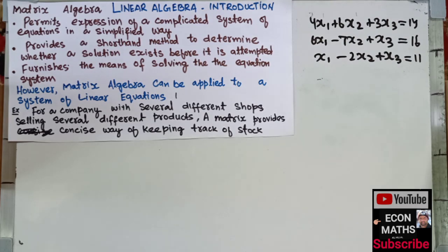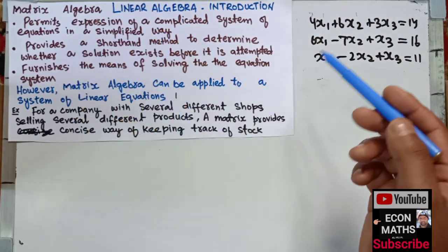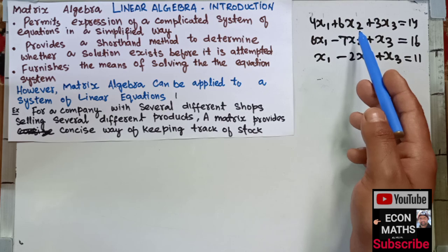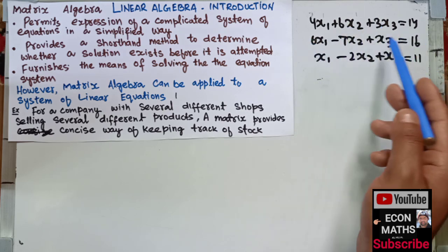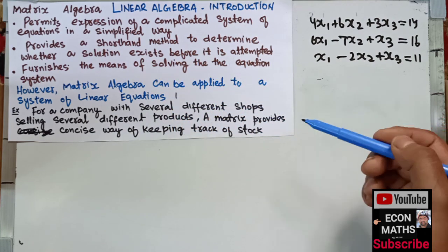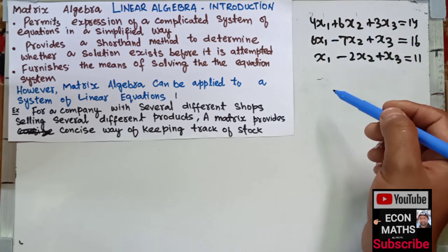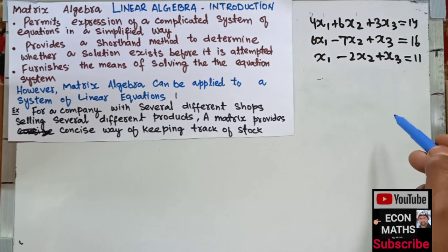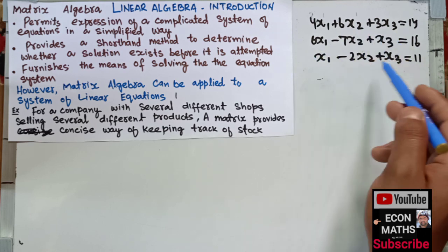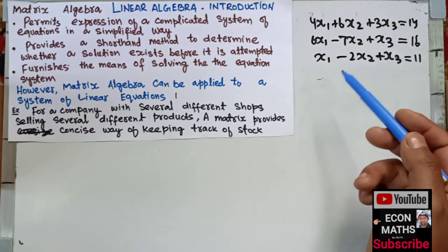Hi, this is Halal. In this video on a mathematical economics series, we will start a new chapter on matrix algebra or linear algebra. Linear algebra permits the expression of a complicated system of equations in a simplified way. If we have a system of linear equations like 4x1 plus 6x2 plus 3x3 equals 14, along with a second and third equation, matrix algebra helps us express that system in a simplified matrix form.